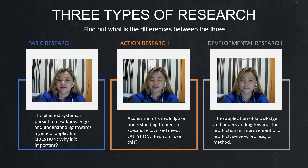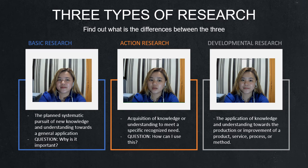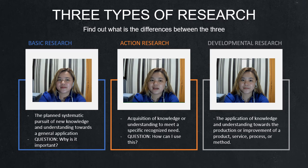The second type is Action Research — it is the acquisition of knowledge or understanding to meet a specifically recognized need. It answers the question: How can I use this? Action research is used by agriculturists and similar fields that need action-based solutions to problems. For example: Can I use this study about coconut oil as a pesticide? That is action research — acquiring knowledge to meet a specific need.